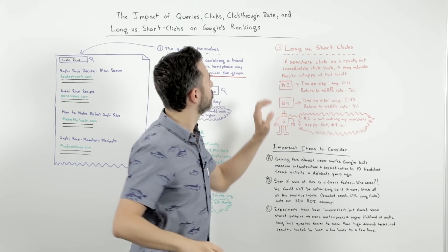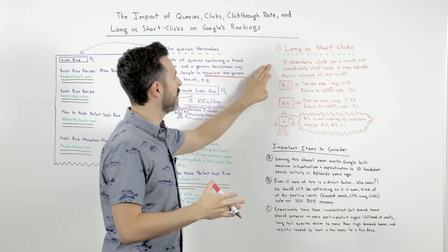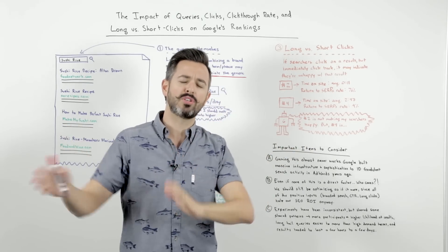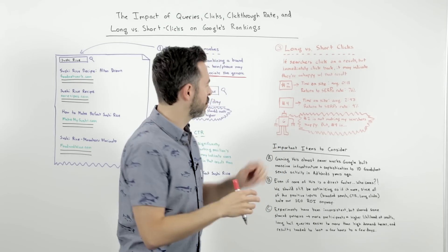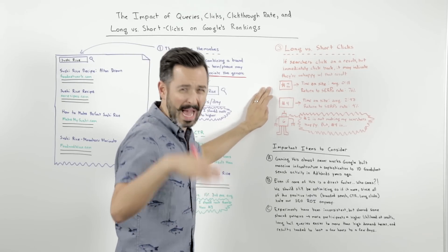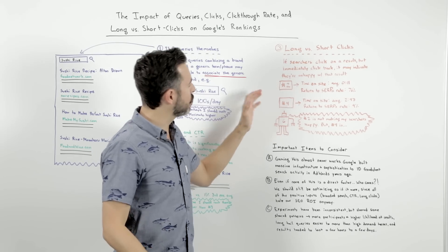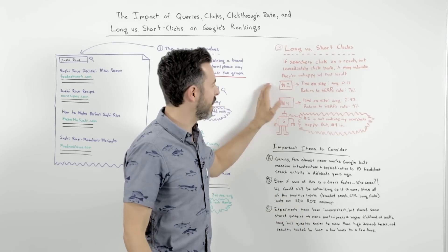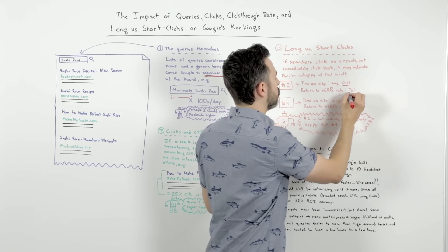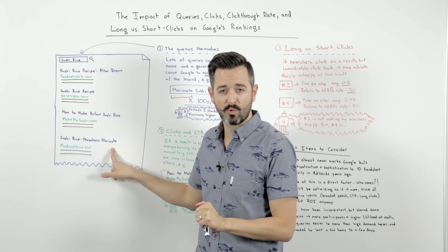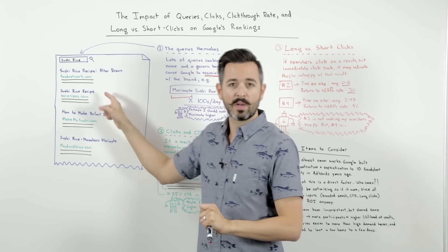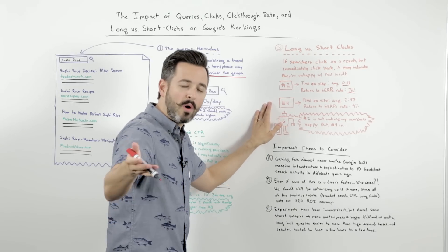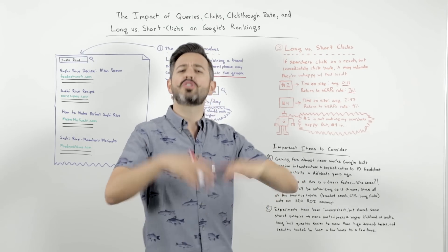The third one is long versus short clicks. This is essentially if searchers are clicking on a particular result but immediately clicking the back button and choosing a different result — that could tell Google that maybe that result isn't great. For example, Google might look at the number two result, norecipes.com, and see that it has an average time on site of 11 seconds and a bounce-back-to-SERPs rate of 76%. So 76% of searchers who click on norecipes.com come back and choose a different result — they're clearly very disappointed.